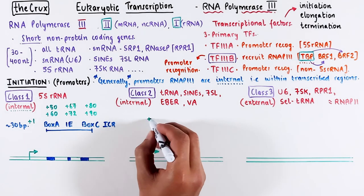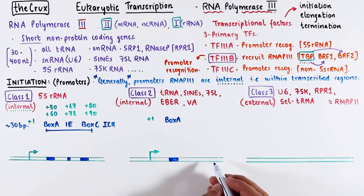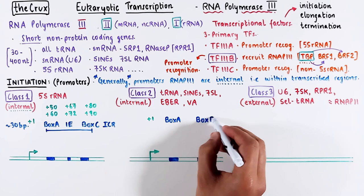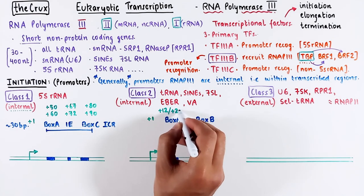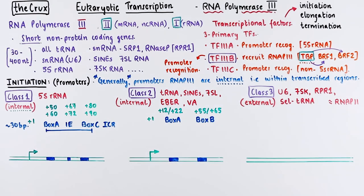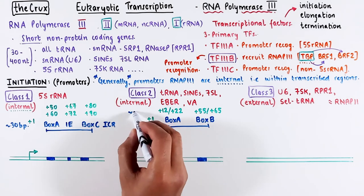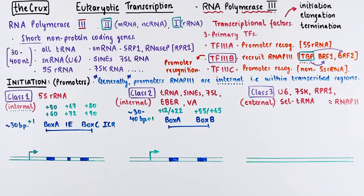Class 2 promoters are structurally similar to class 1. They feature box A and box B, but those boxes are closer to the plus 1 position, resulting in a slightly larger span for the entire region. As a side note, in plants and yeast tRNA genes, you can sometimes find a TATA box. However, for some reason, mammals have eliminated TATA boxes in their tRNA genes.